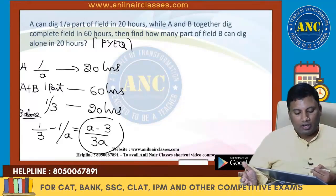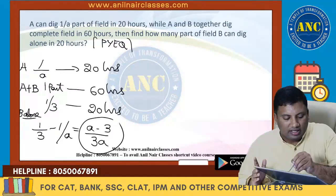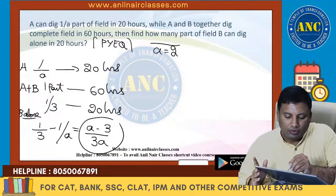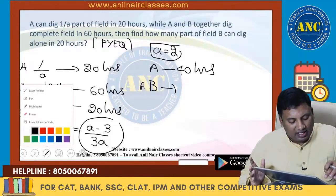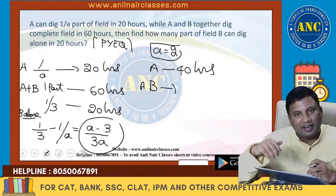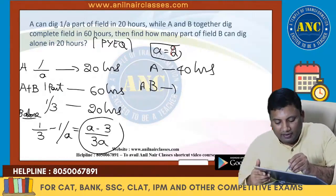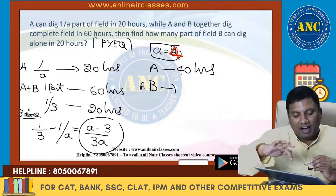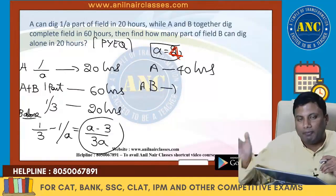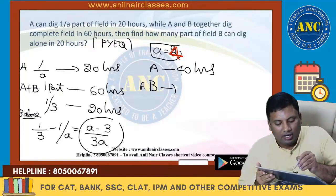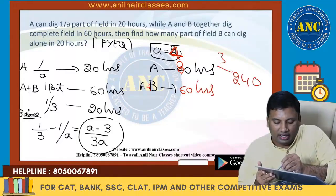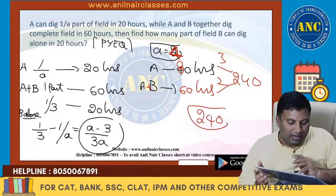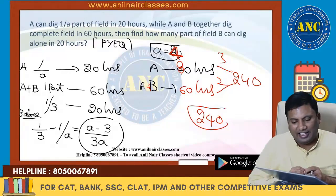For B alone: you can substitute A=2 as a trial. If A=2, half pot in 20 hours → full pot in 40 hours. A+B in 60 hours — but wait, if B takes longer than A alone, the combined should be less than 40, not 60. So take A=4: full pot in 80 hours. A+B in 60 hours → LCM of 80 and 60 = 240. A does 3 units/day, A+B do 4 units/day → B does 1 unit → B alone = 240 days. Check via answer options to confirm.